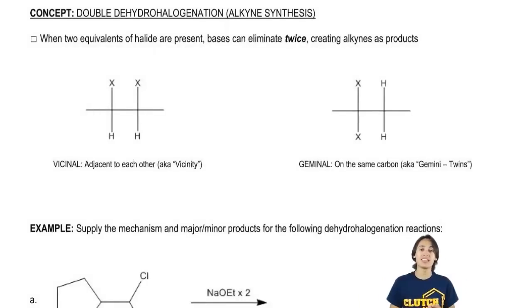Basically when we react some kind of dihalide with two equivalents of base, it's going to be able to react twice making an alkyne instead of an alkene. Now there's actually two different ways that we can make dihalides and we haven't talked a whole lot about dihalides yet so I'm going to introduce them here.